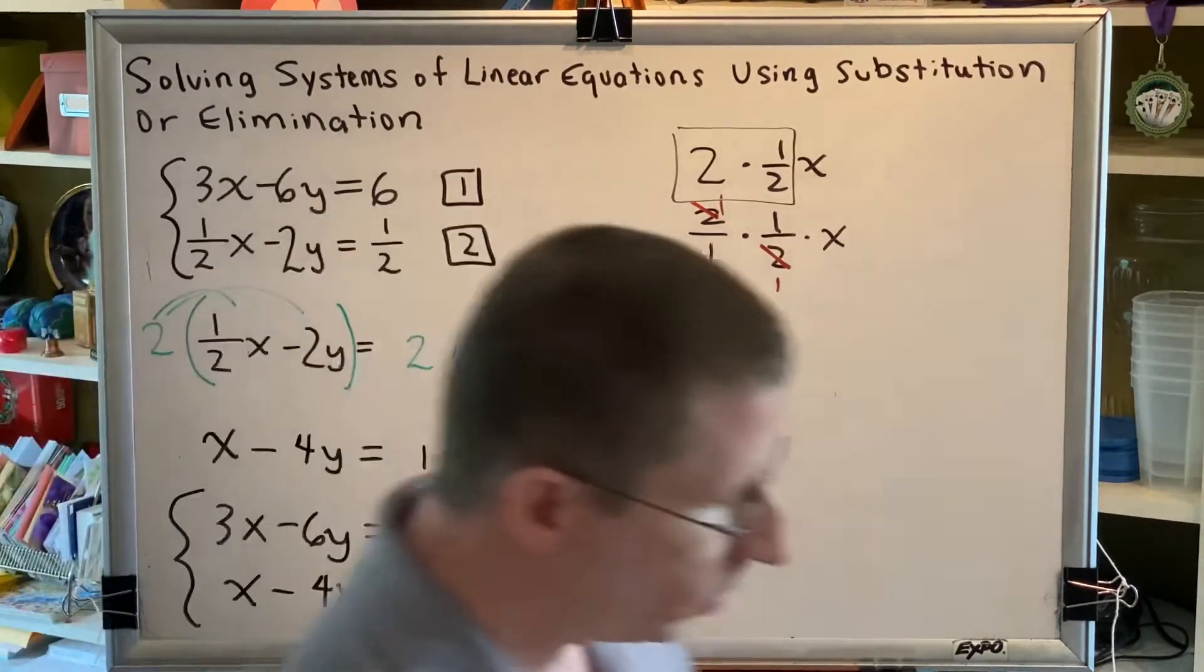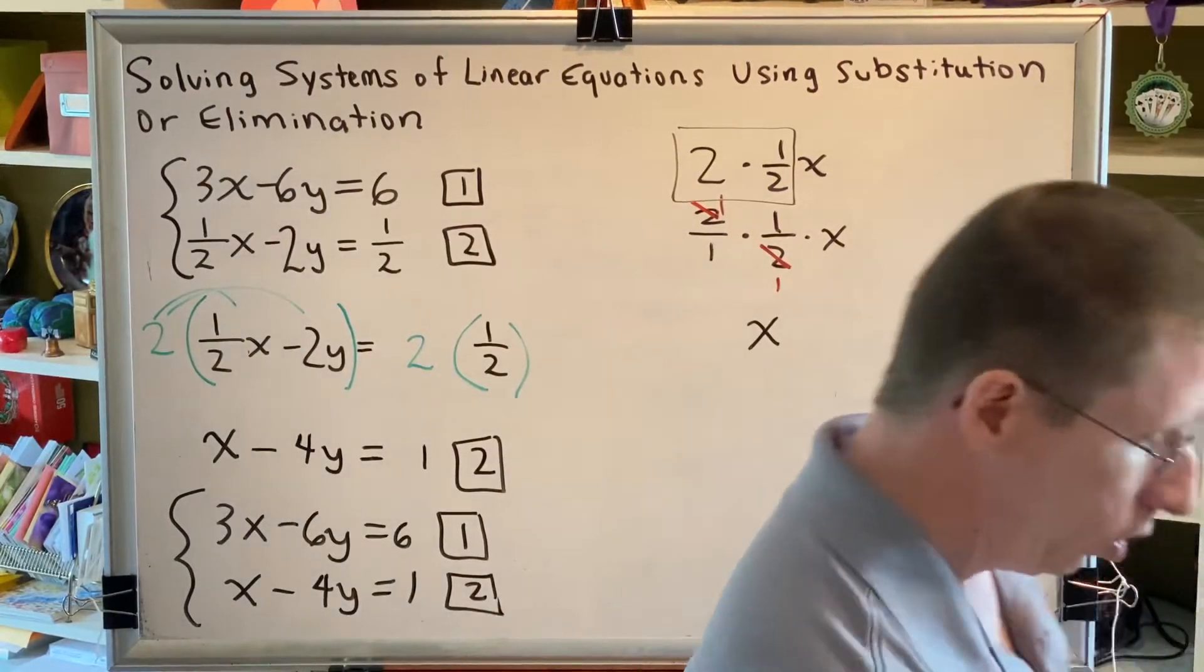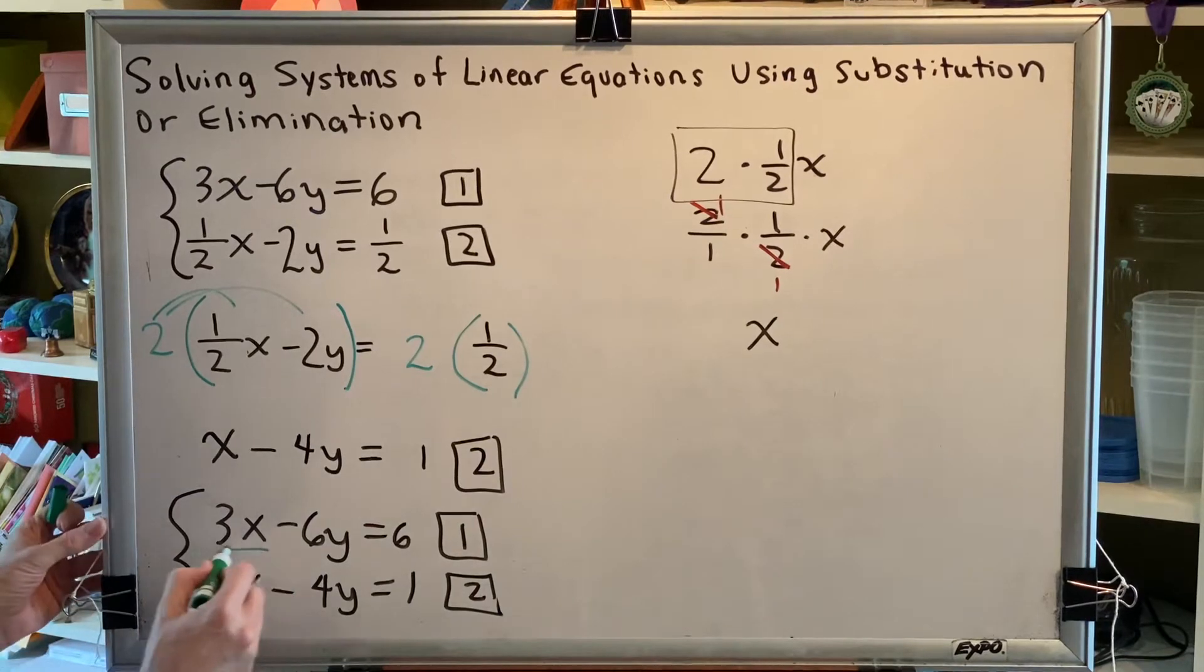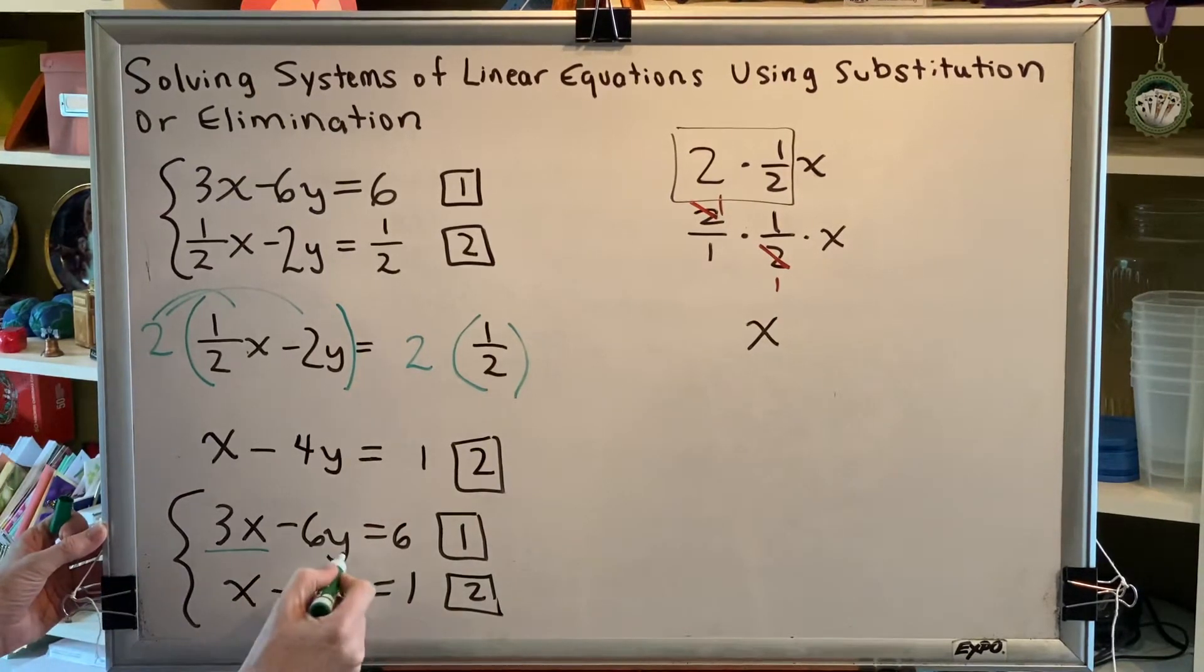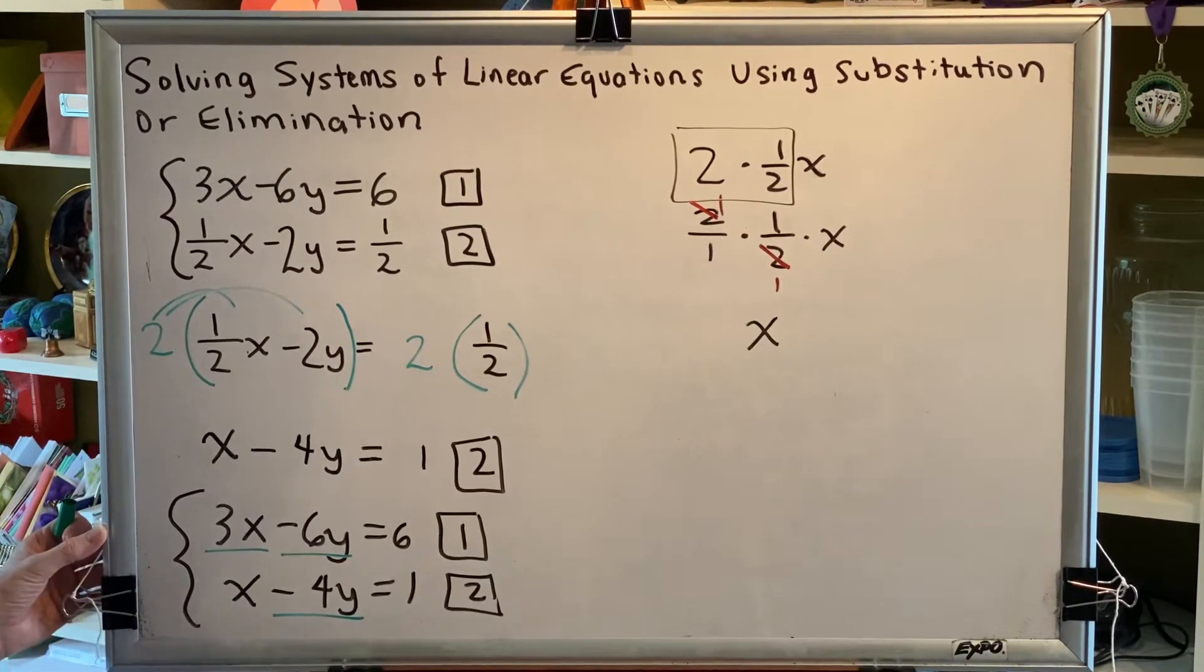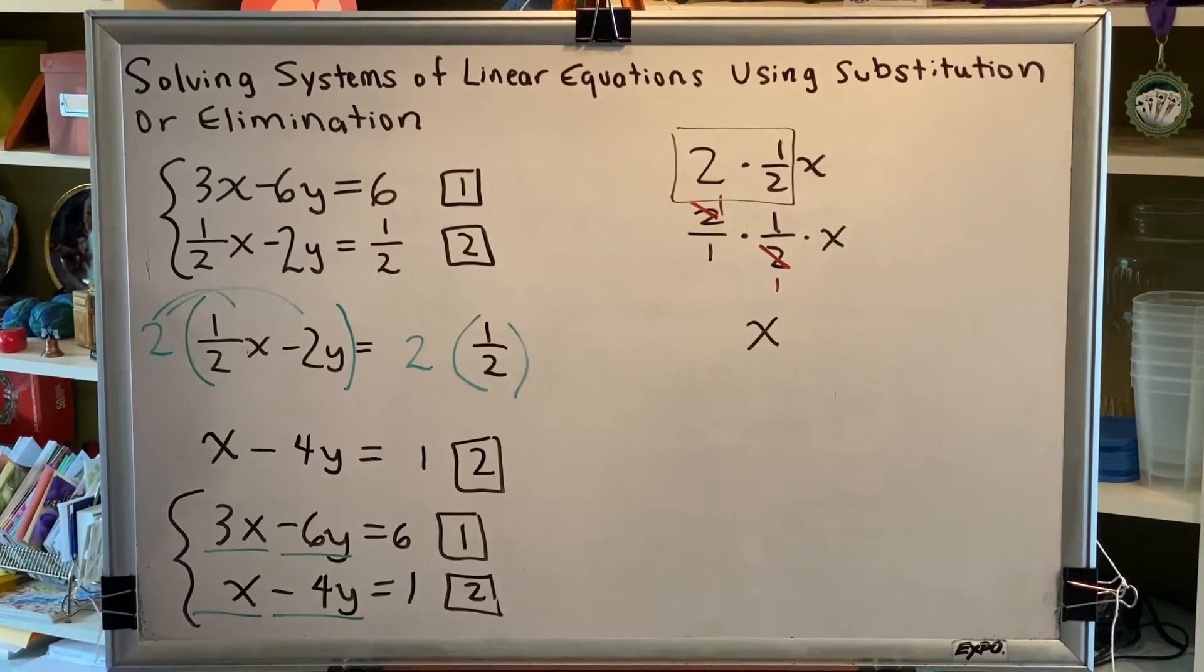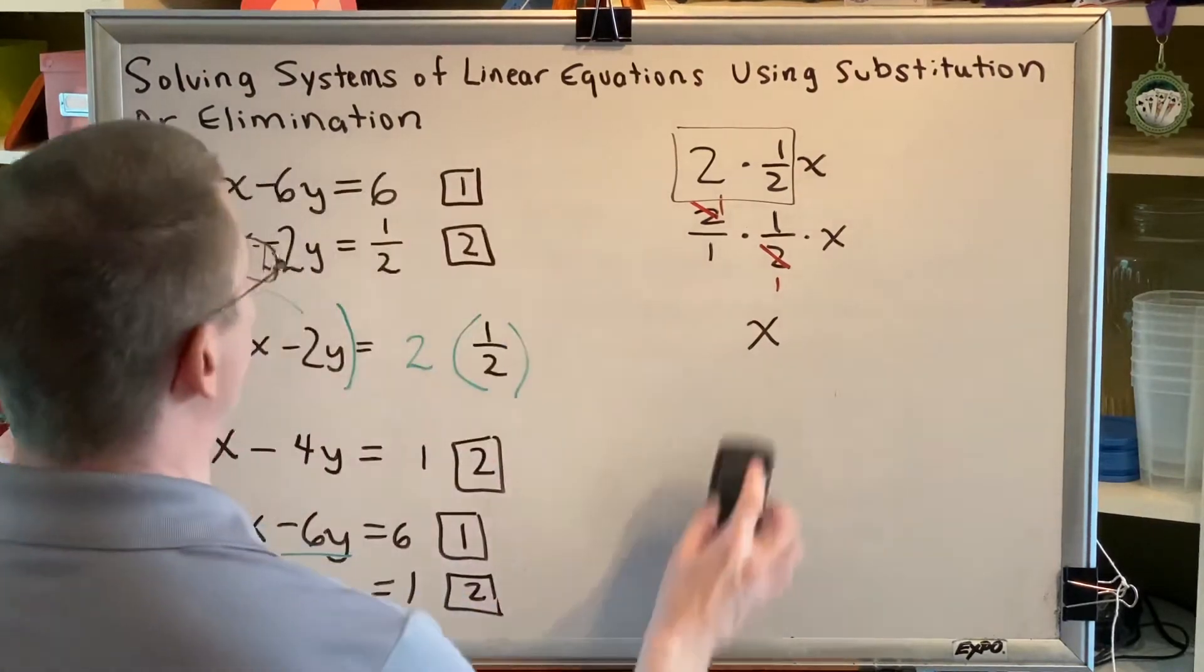That was step 1 in determining which method to use. Step 2, once all fractions are cleared, look for any x or y terms with a coefficient of 1 or negative 1. And if you can find any terms like that, use substitution. So let's look at all of our coefficients. This x term has a coefficient of 3. This y term has a coefficient of negative 6. This y term is a coefficient of negative 4. This x term has a coefficient of positive 1. That's the one we want. So we're going to use substitution to solve this problem.